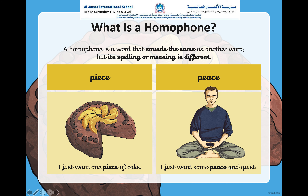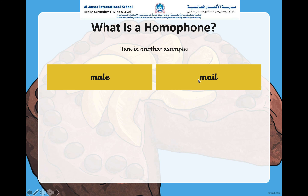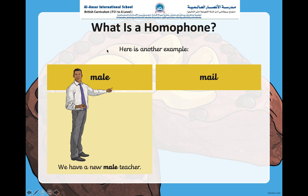Here's another example: male and mail. They sound the same, they are spelt differently, and they mean different things. The first word, 'male', is a man — for example, we have a new male teacher. The second word, 'mail', is a letter — for example, the postman delivered the mail.